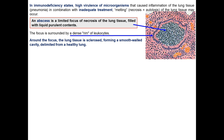An abscess is a limited focus of necrosis of the lung tissue filled with liquid purulent content. Lung abscesses are formed as a result of fighting between microorganisms. As you see in the picture, the focus is surrounded by a dense rim of leukocytes around the focus, and the lung tissue is sclerosed, forming a smooth-walled cavity delimited from healthy lung.